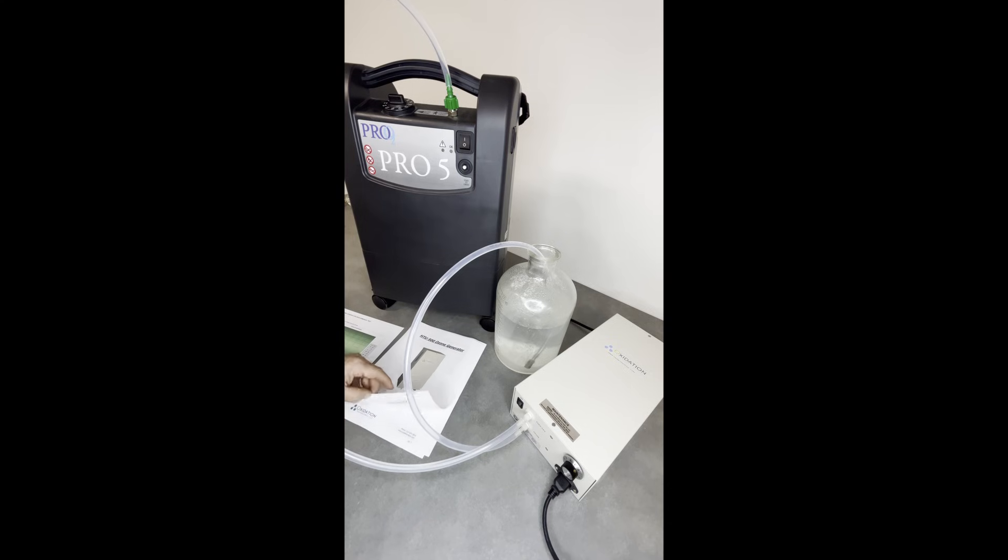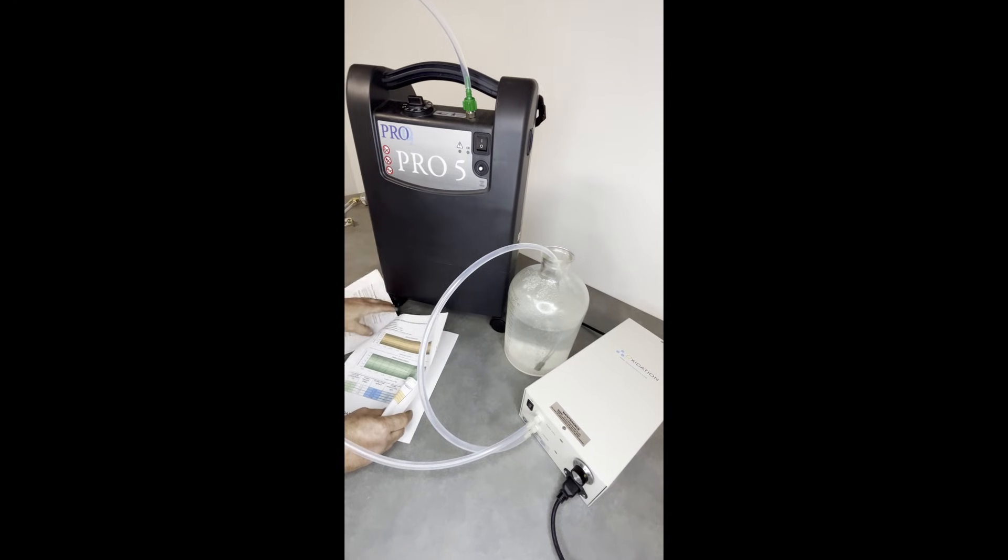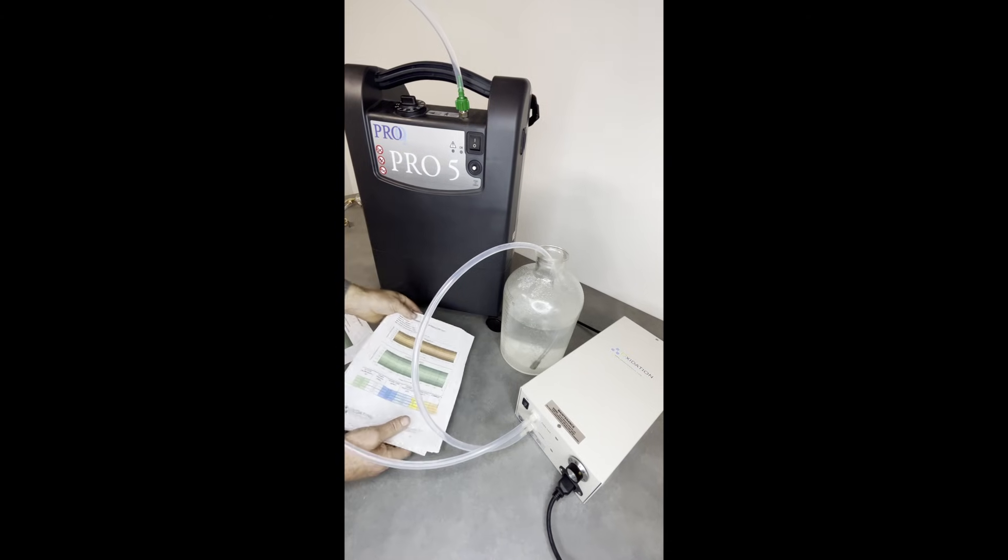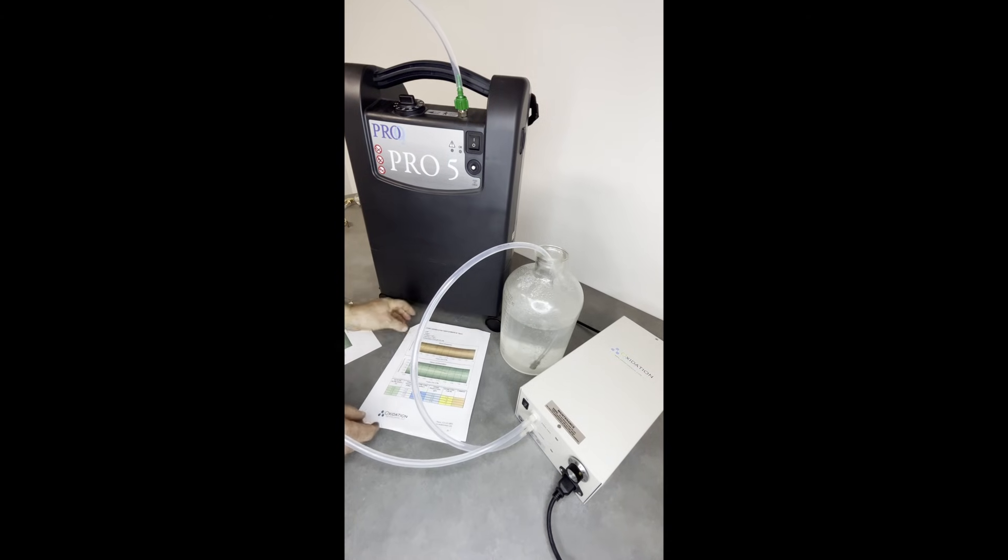In the HTU 500 ozone generator manual, we do have these performance tests that show at different oxygen flows, how much ozone it's making. This here is measuring ozone production in grams per hour, so that's the overall amount of ozone it's producing.